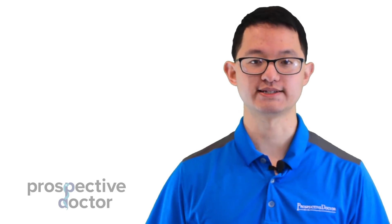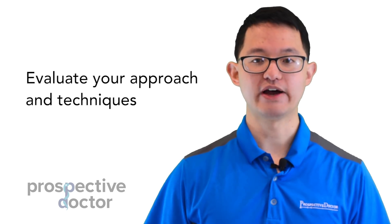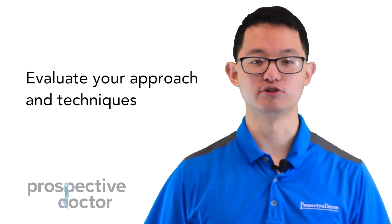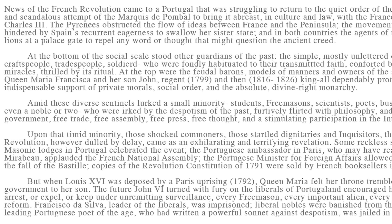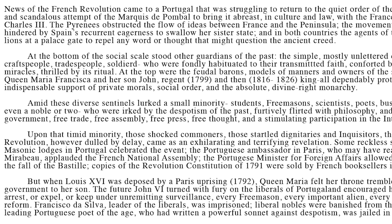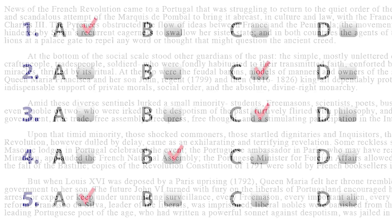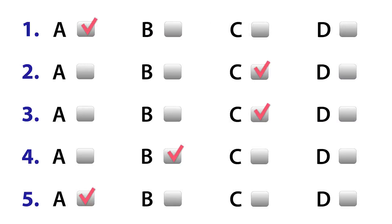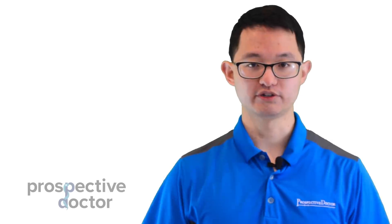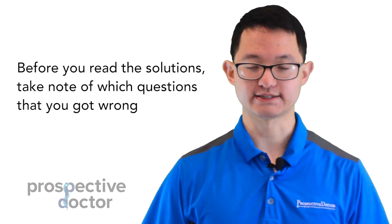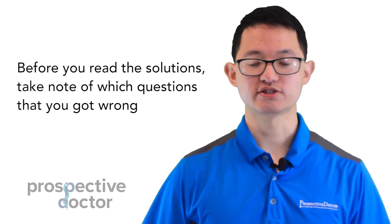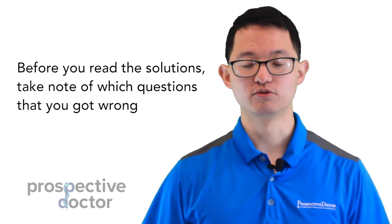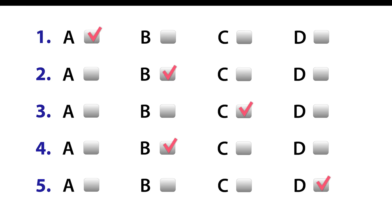The second strategy is to evaluate your approach and techniques. Usually when students complete an MCAT CARS passage, they'll go ahead and look at the solutions. What I want you to do is, before you read the solutions, take note of which questions you got wrong — for example, I got question two wrong and question five wrong.